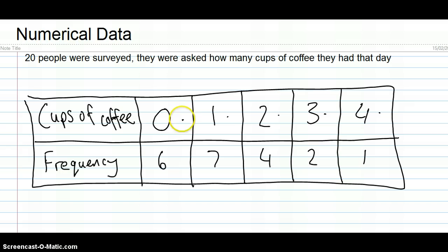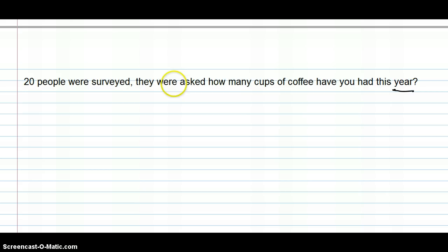As we'll see in a moment, sometimes we can, if we've got lots and lots of possible scores, we can put them together in groups. Well, let's look at some grouped data. Let's say we did another survey. This time, twenty people were surveyed again, and they were asked a different question. Instead of how many cups of coffee had they had in a day, they were asked how many cups of coffee have you had this year, in an entire year.